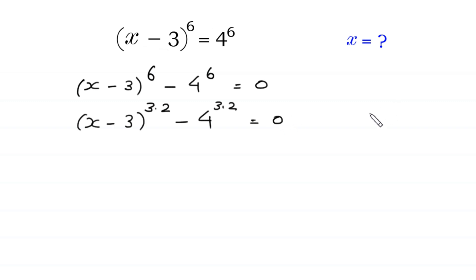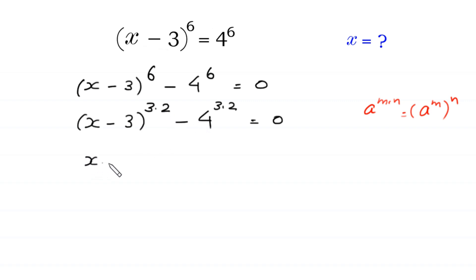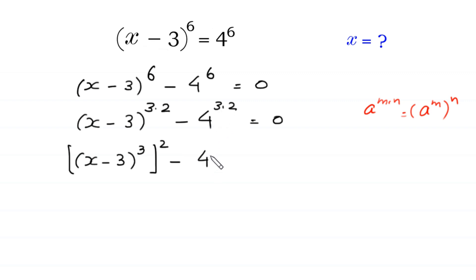Now, according to the property of exponents — a to the power m×n is equal to (a to the power m) whole to the power n — we can write (x minus 3) to the power 3×2 as [(x minus 3)³]² minus [4³]² is equal to 0.